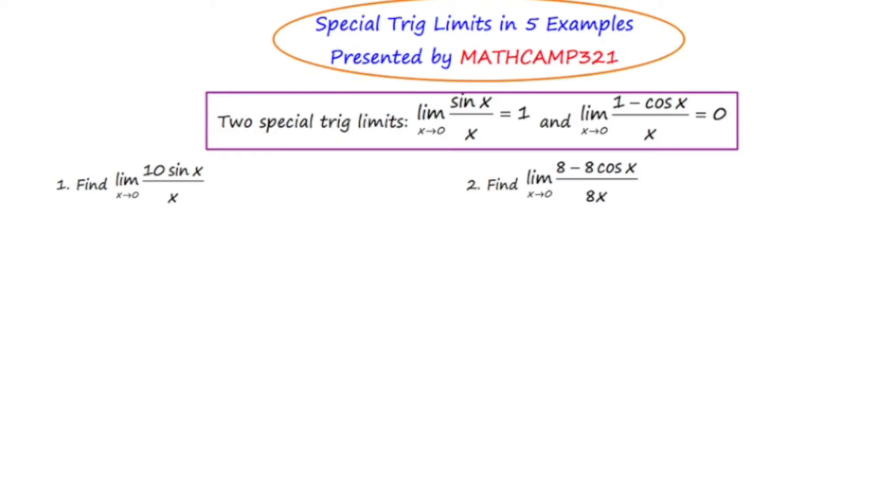The first special trig limit says the limit of sine of x over x as x approaches 0 is 1, and the second trig limit is the limit of the expression 1 minus cosine x over x as x approaches 0 is 0. I find that it's easy for students to confuse these two. They know one equals 0 and one equals 1, but they can never remember which one is which. So I'm going to tell you something that I think is going to really help you out.